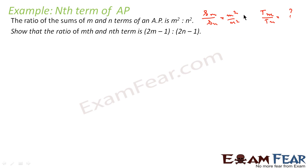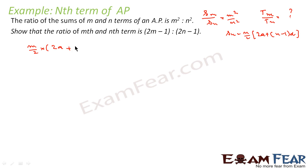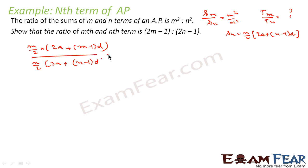So let's assume we only have this equation. We know that Sn equals n by 2 into (2a plus n minus 1 into d). So we write Sm equals m by 2 into (2a plus m minus 1 into d), divided by Sn equals n by 2 into (2a plus n minus 1 into d), and this whole ratio equals m² by n², which is given to us.